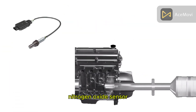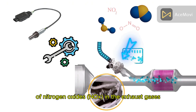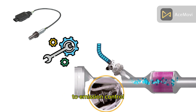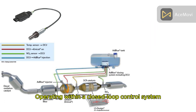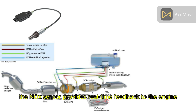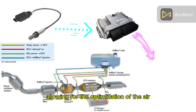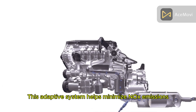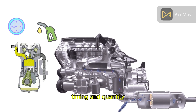The nitrogen oxide sensor is a critical component that monitors and controls the levels of nitrogen oxide in the exhaust gases. Its primary function is to contribute to emission control, ensuring compliance with environmental regulations. Operating within a closed-loop control system, the NOx sensor provides real-time feedback to the engine control unit, allowing for the optimization of the air-fuel mixture and combustion process. This adaptive system helps minimize NOx emissions by adjusting parameters like fuel injection timing and quantity.